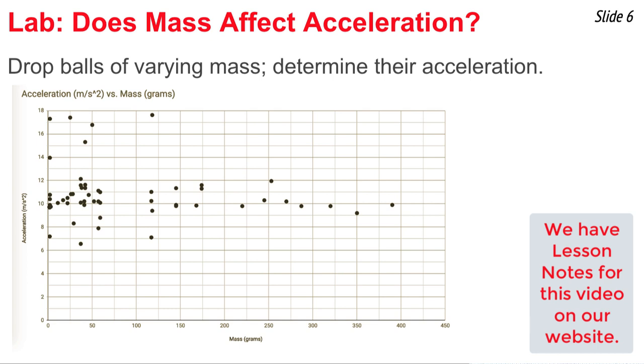The question is, what's the pattern that develops between acceleration and mass? Is it quadratic? I don't think so. Is it linear with a positive slope or linear with a negative slope? No, I don't really think so.